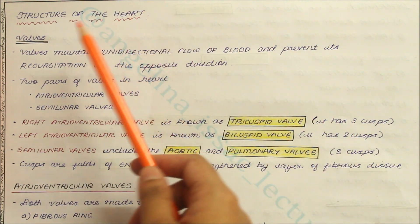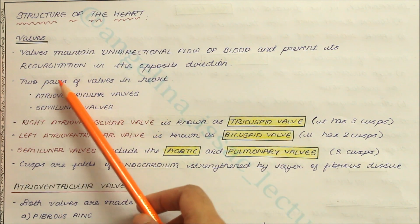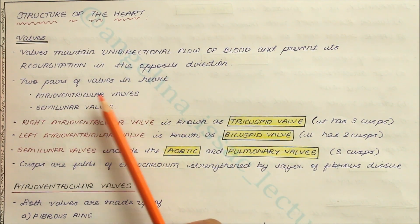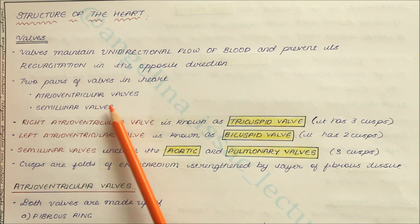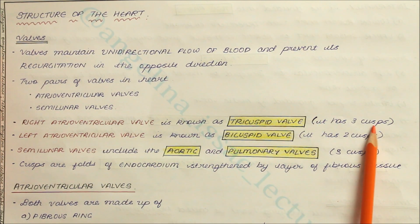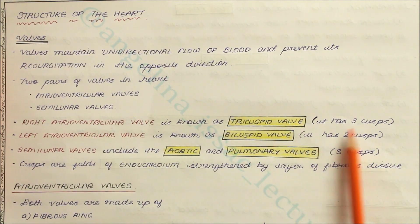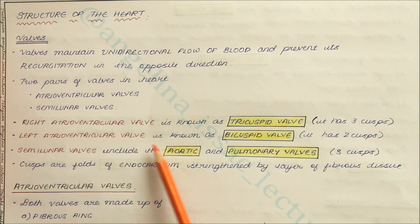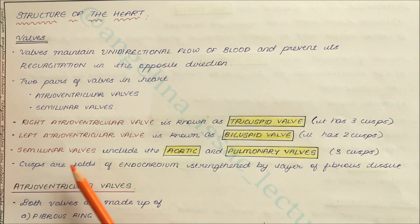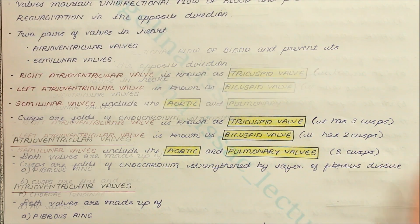To summarize the key points: the valves maintain unidirectional flow of blood and prevent regurgitation. The two pairs of valves are the atrioventricular valves and the semilunar valves. The right atrioventricular valve is the tricuspid valve with three cusps; the left is the bicuspid valve with two cusps. The semilunar valves include the aortic and pulmonary valves, each with three cusps. The cusps are folds of endocardium strengthened by fibrous tissue.